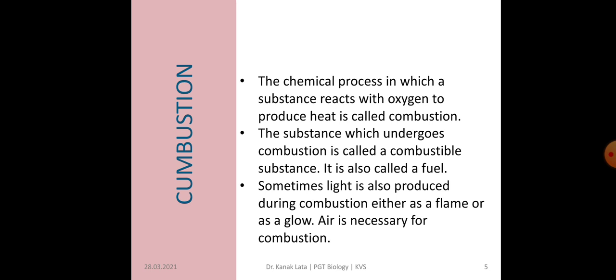Now the next process is combustion. What is combustion? It is a chemical process in which a combustible substance reacts with oxygen and as a result produces heat. This process of a substance reacting with oxygen to produce heat is called combustion. Those substances which undergo combustion are called combustible substances, and they are also called fuel. Sometimes during combustion, light is also produced, in the form of a flame or a glow.